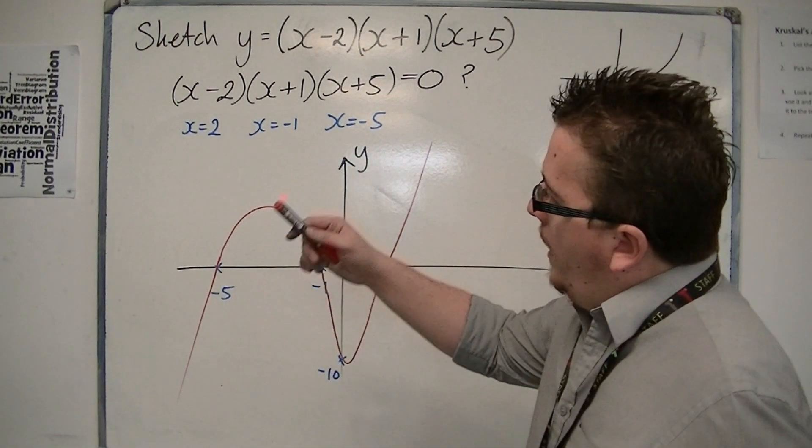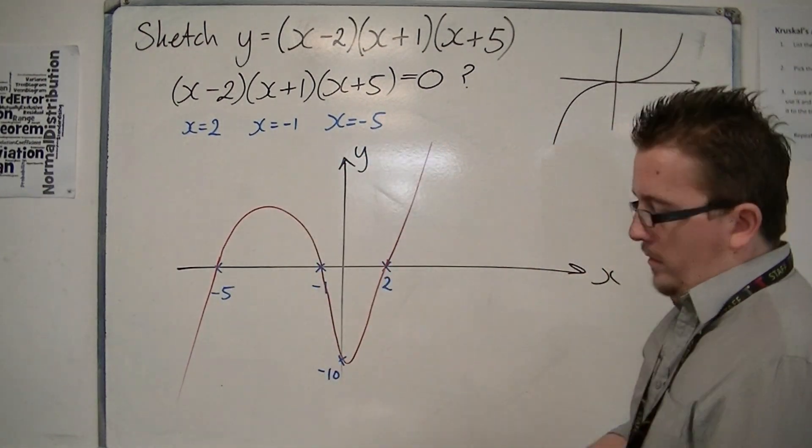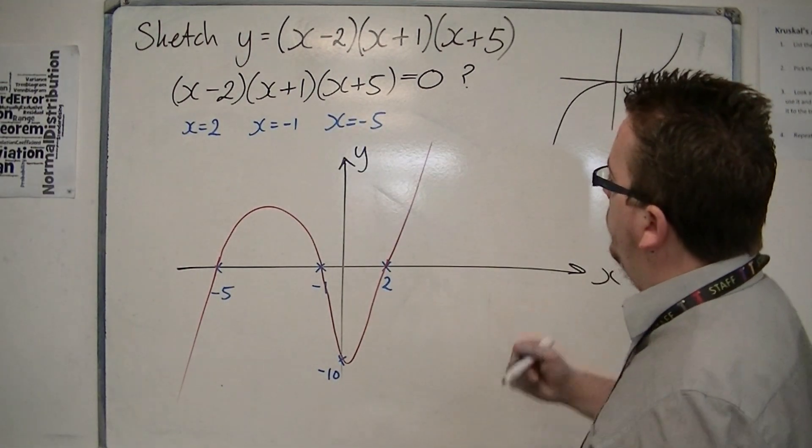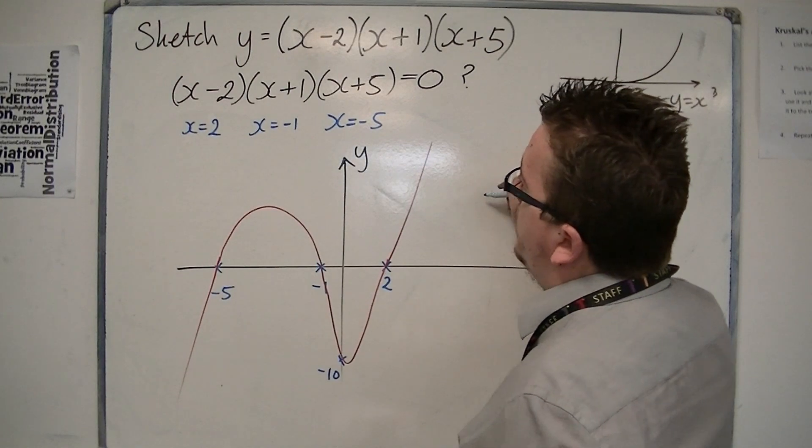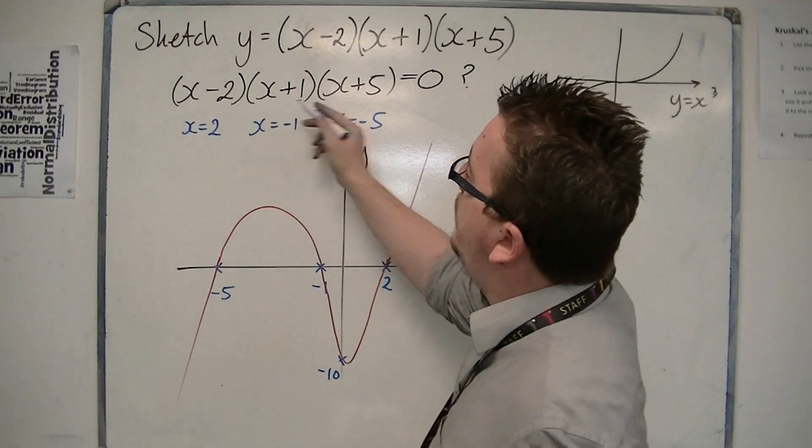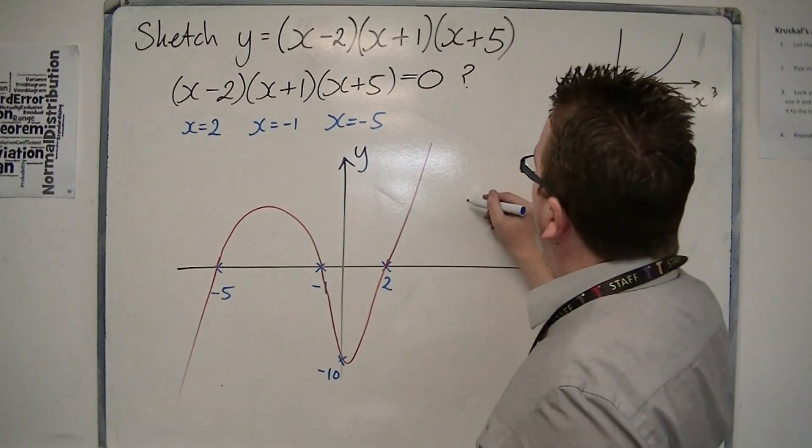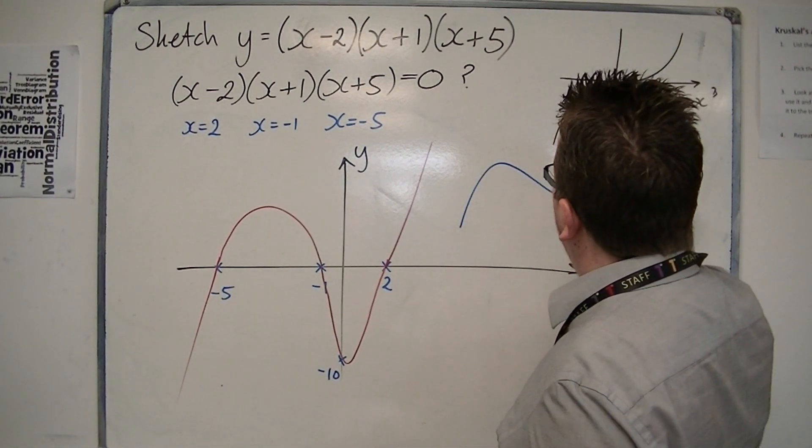So a positive cubic like this, with three linear terms. So if the number in front of the x cubed is positive, which this would be, because you've got three positive terms of x, would look like this shape.